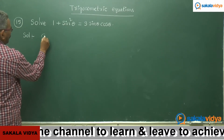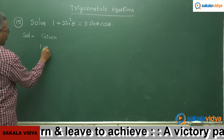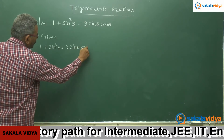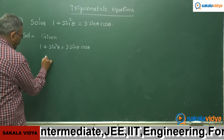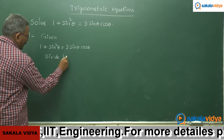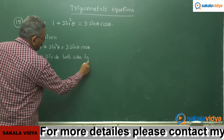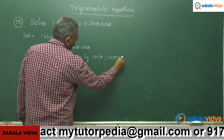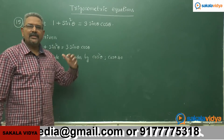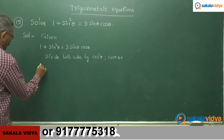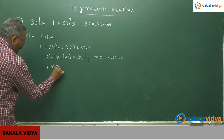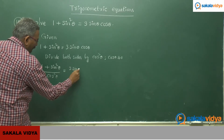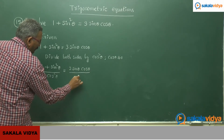Given: 1 plus sine square theta equals to 3 sin theta cos theta. We divide both sides by cos square theta, where cos theta does not equal to 0. Having divided by cos square theta on both sides, the equation becomes: 1 plus sine square theta divided by cos square theta equals to 3 sin theta cos theta upon cos square theta.